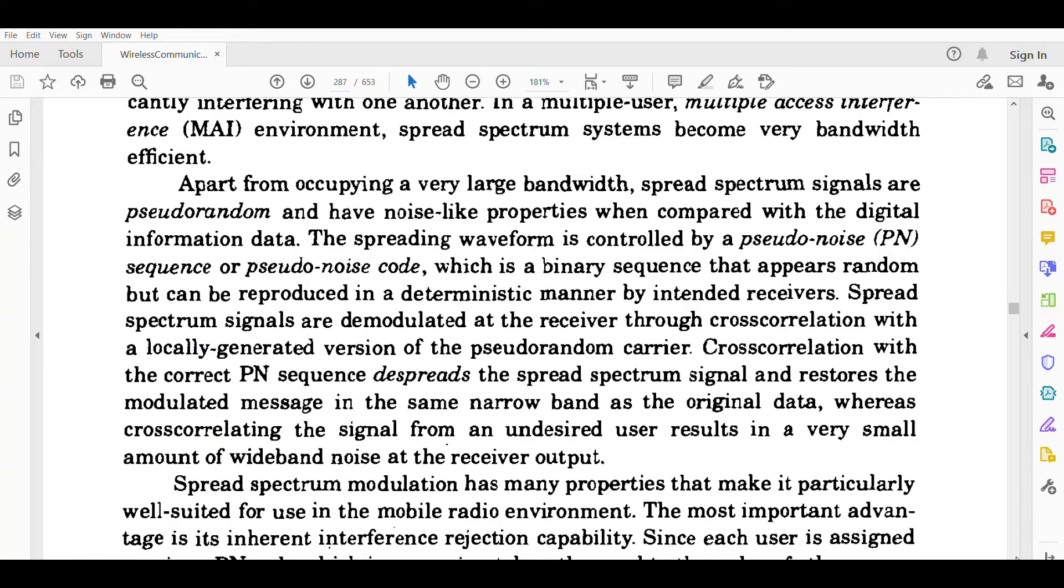Apart from occupying a very large bandwidth, spread spectrum signals are pseudo-random and have noise-like properties when compared with the digital information data. The spreading waveform is controlled by pseudo-noise, which is PN sequence, or pseudo-noise code, or PN code.